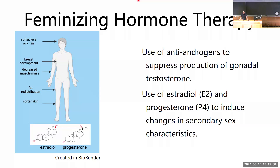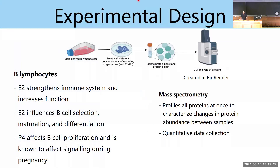On a cellular level, there is very little information on how these hormone treatments are affecting patients, so the goal of this research is to characterize the changes happening in people undergoing gender-affirming hormone therapy. B lymphocytes were chosen because they are immune cells and there are already many sex differences in the immune system. These immune system differences are due to a combination of sex hormones and sex chromosomes and usually result in stronger immune function in people assigned female at birth. Mass spectrometry was chosen because it can quantify and characterize changes in protein abundance between samples.